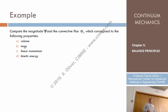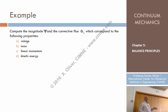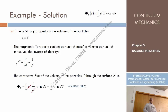Let's see some examples. Imagine that the property we are talking about is the volume. We need to define the specific content of volume. The amount of volume per unit of mass — but if we invert this, it would be the amount of mass per unit of volume. Does that sound familiar? That is the density. So if volume is the property, then the specific content is the inverse of the density.